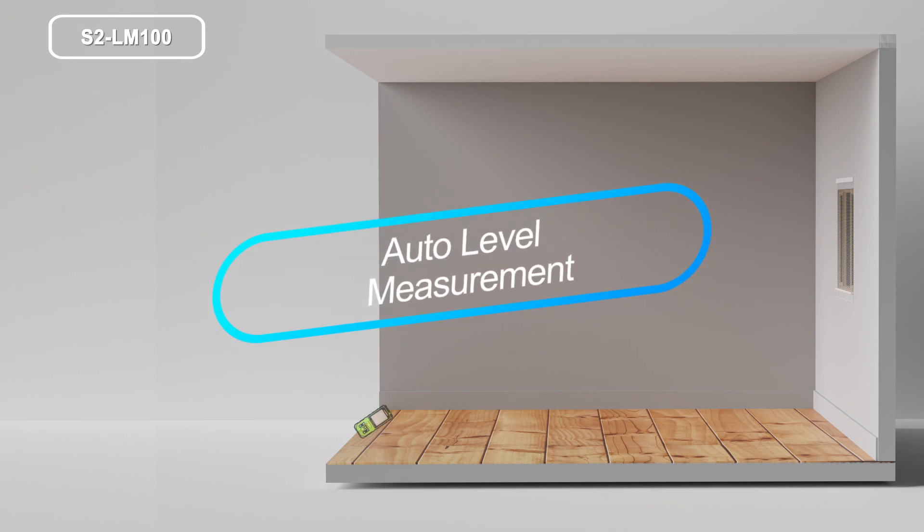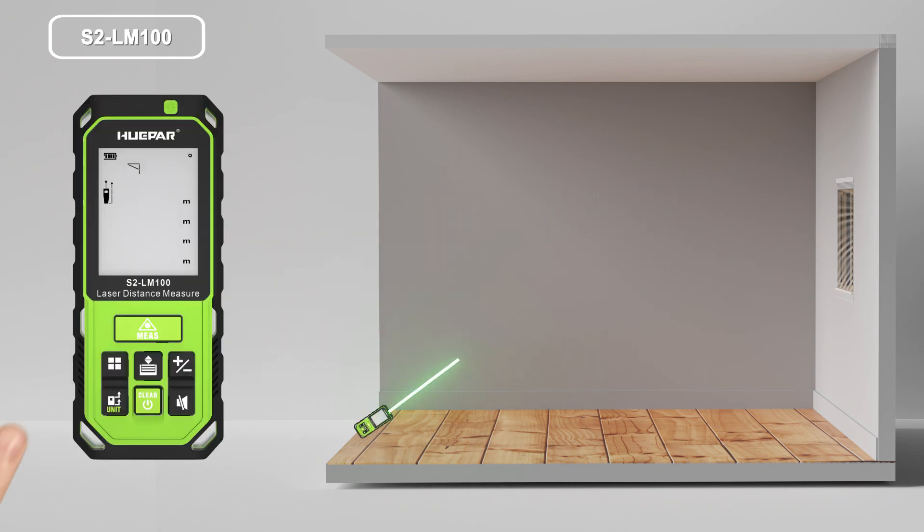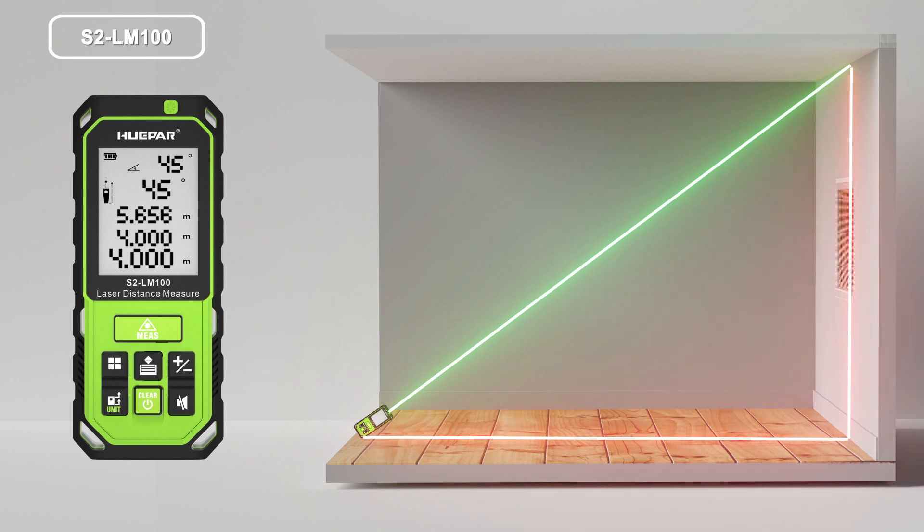Auto-level measurements. Press the bottom six times to auto-level. Aiming at the first target point, press the bottom to get the angle between hypotenuse and horizontal edge, hypotenuse, vertical length, and horizontal length. The result is displayed in line accordingly of the screen.